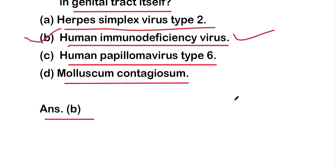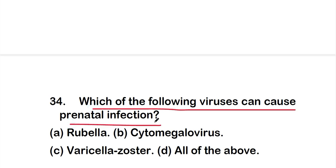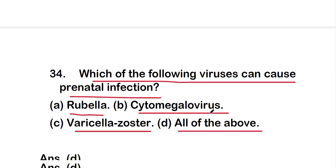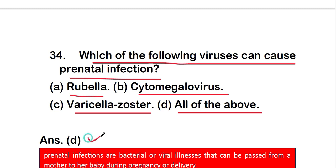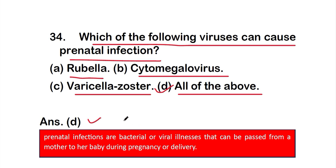Question 34: Which of the following viruses can cause prenatal infection? Option A: Rubella virus, option B: cytomegalovirus, option C: varicella zoster virus, or option D: all of the above. The right answer is option D — all of the above are responsible for prenatal infection. Prenatal infections are bacterial or viral illnesses that can be passed from a mother to her baby during pregnancy or delivery.